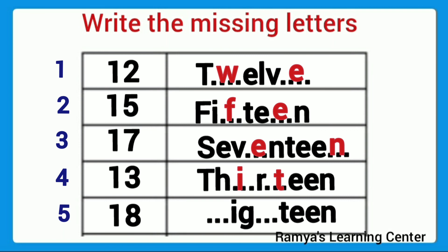18: E-I-G-H-T-E-E-N. The first missing letter is E, then the next missing letter is H.